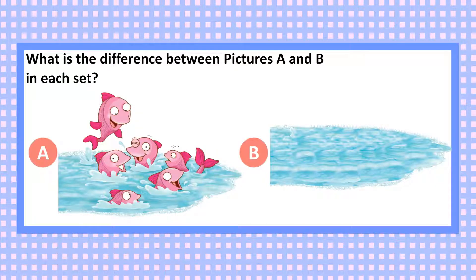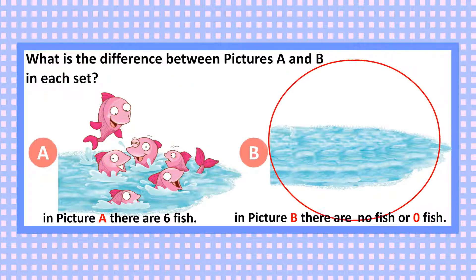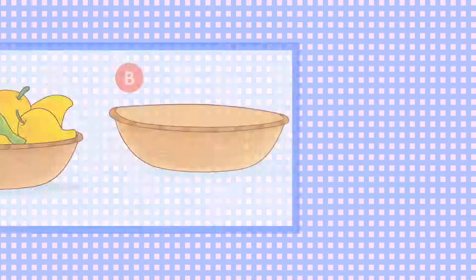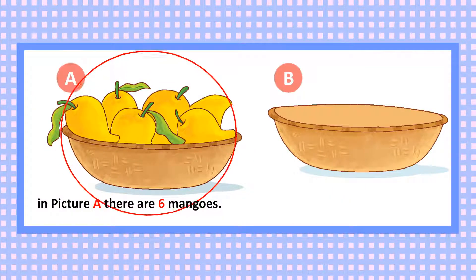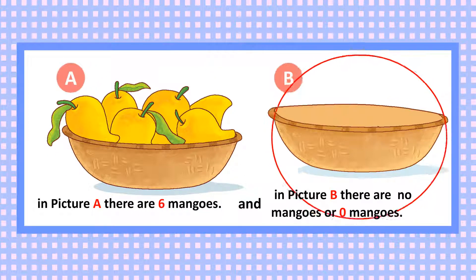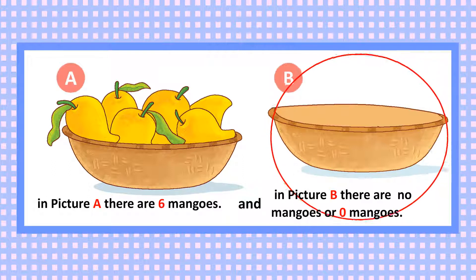What is the difference between picture A and picture B in each set? In picture A there are six fish, and in picture B there are no fish, or zero fish. In picture A there are six mangoes, and in picture B there are no mangoes, or zero mangoes.